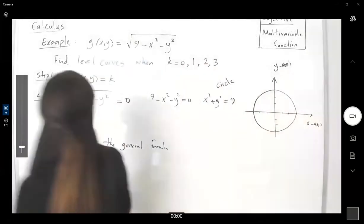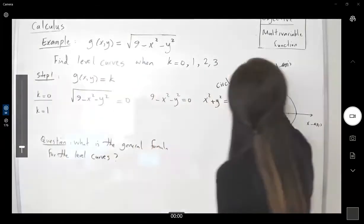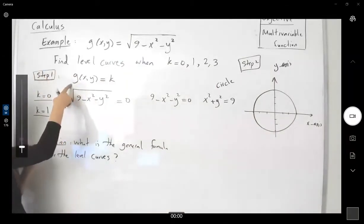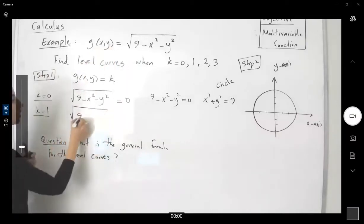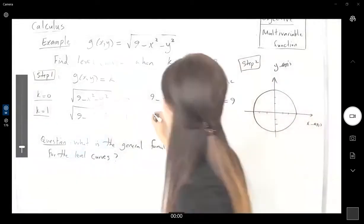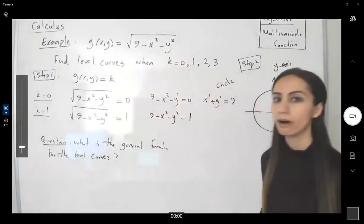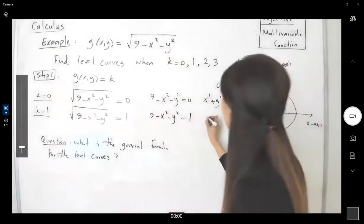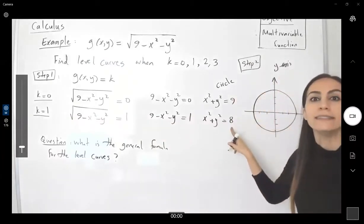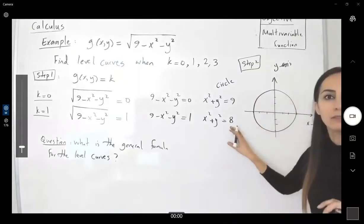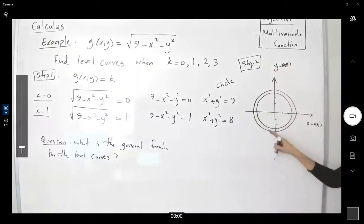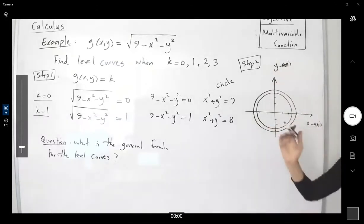What if k is equal to 1? This is step 2 — graphing that. k is equal to 1 means I set the function equal to my k: square root of 9 minus x squared minus y squared equals 1. Raising both sides to the second power gives 9 minus x squared minus y squared equals 1. Rearranging, x squared plus y squared equals 8. My radius is shrinking — here the radius is square root of 8. This is the second circle, getting smaller and smaller.